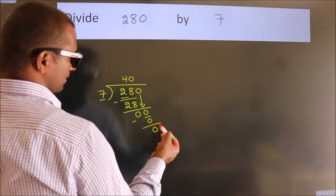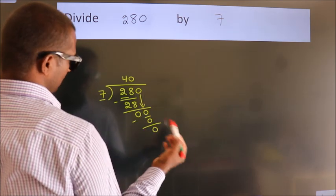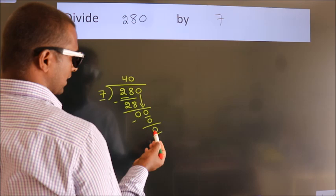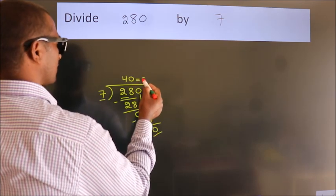After this, no more numbers to bring it down. And we got remainder 0. So this is our quotient.